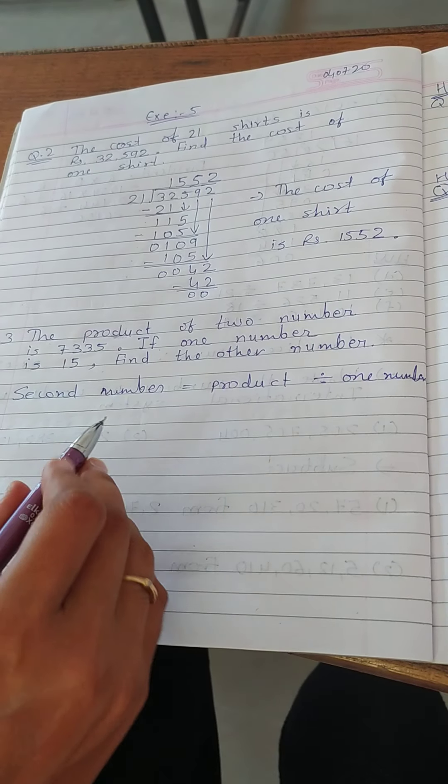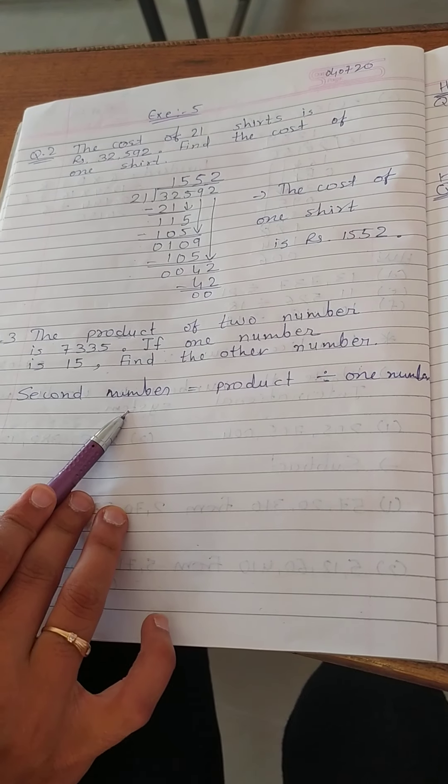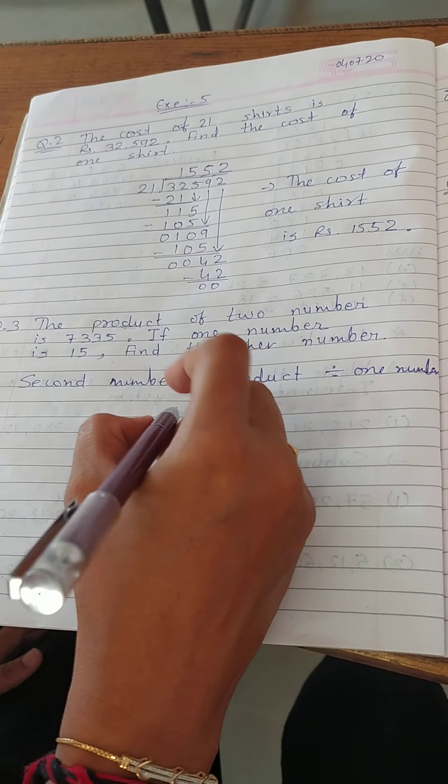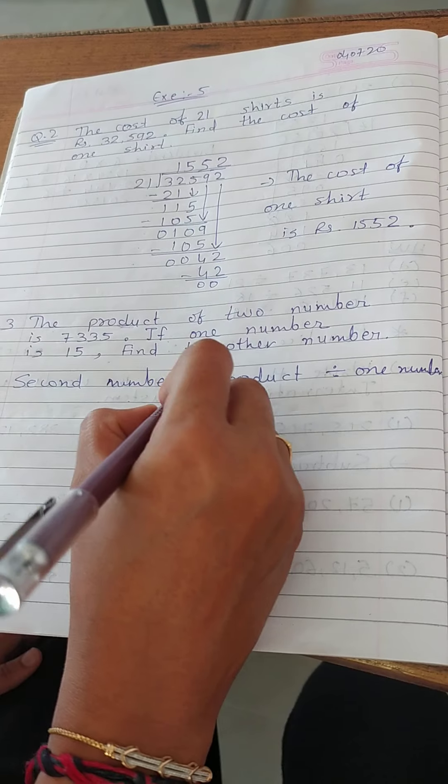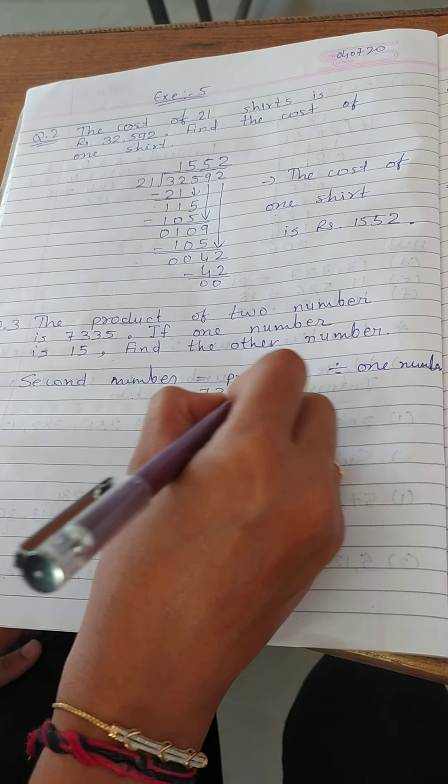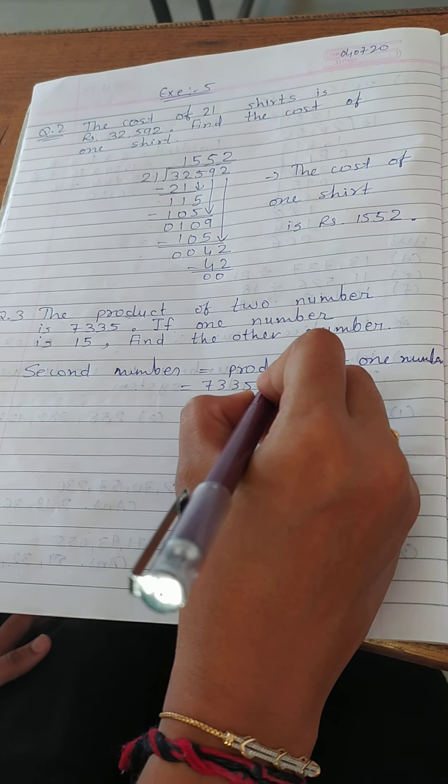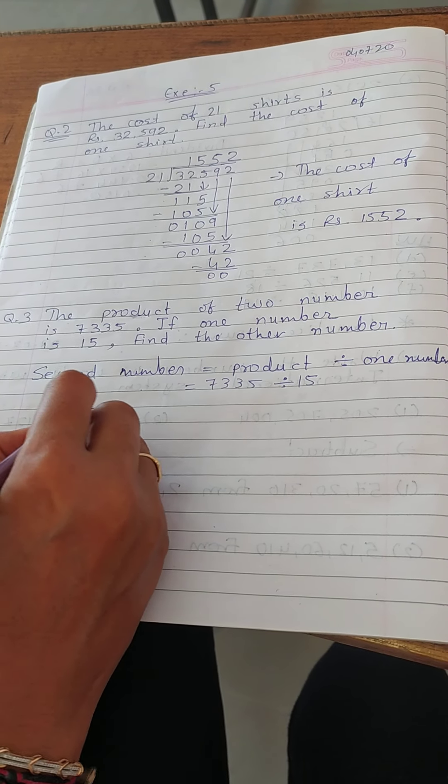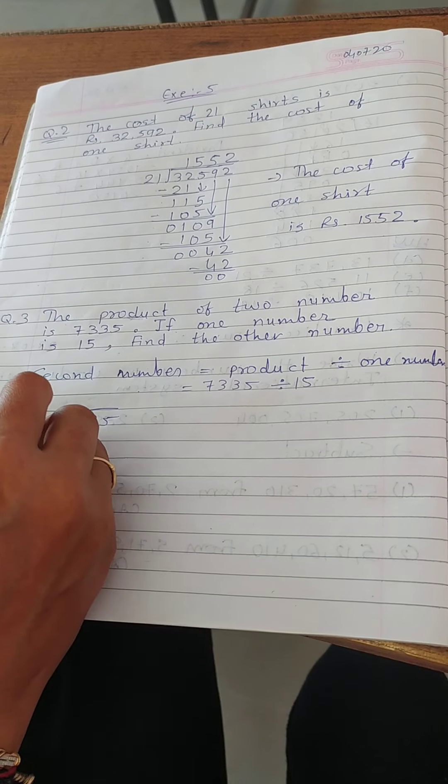Okay, so if we want to find the second number, at that time we must do division. So product is 7335 and one of the number is 15. So let's do division.